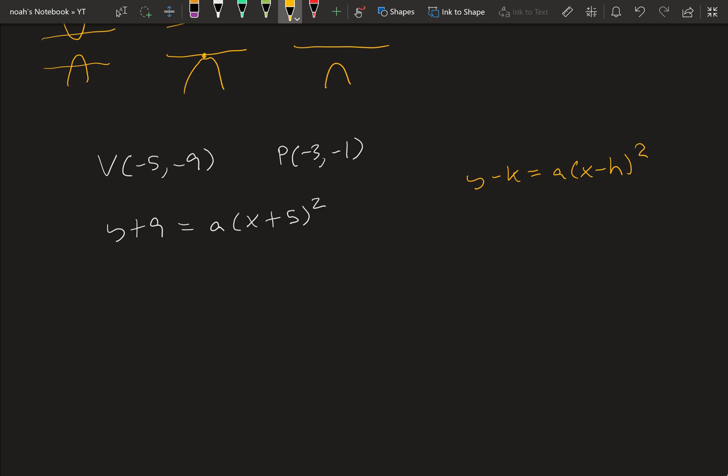the vertex is opposite. So when we have minus 5, this is plus 5. Minus 9, this is plus 9.